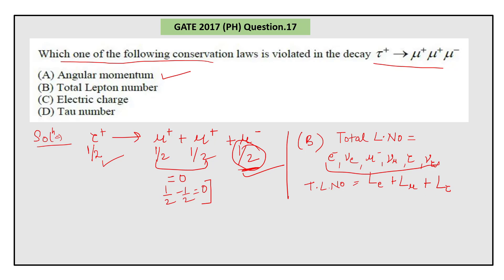Leptons have lepton number equal to one, and anti-leptons have lepton number minus one. Here you can see tau positive is an anti-lepton, so it has lepton number minus one.